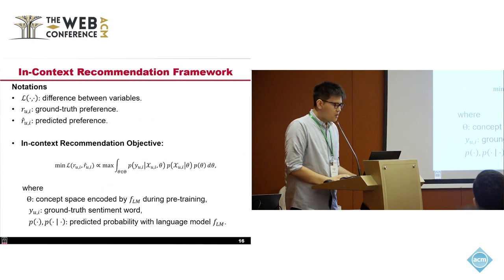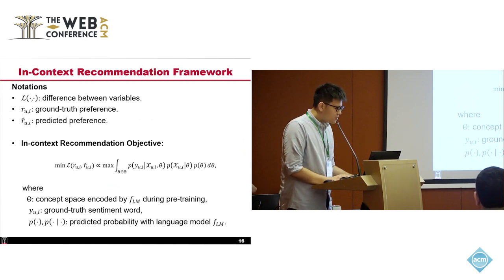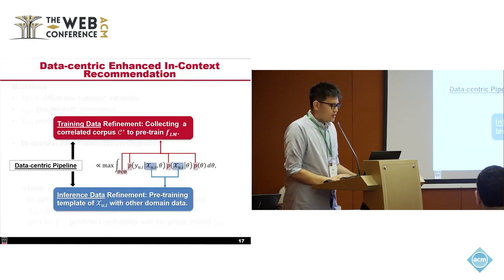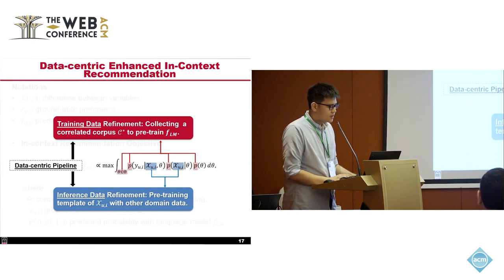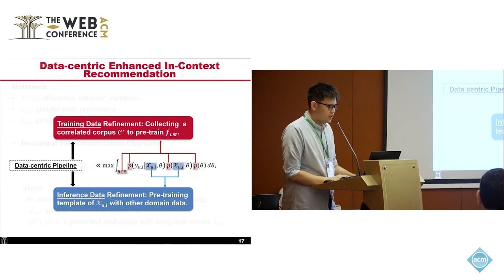Before introducing the proposed method, we first formalize the in-context recommendation problem. Under the prompt setting and the Hidden Markov Model assumption, the original objective of the recommendation task can be transformed to a new form shown on the right-hand side. This new equation shows that a good in-context recommender needs to encourage the pre-trained language model to maximize each probability defined here. This analysis motivated us to propose two strategies to maximize this equation: first, pre-training the language model on a corpus correlated to our target cold-start domain; second, pre-training prompting templates from other recommendation datasets. The correlated corpus refers to training data which can modify model parameters, while the prompting template is inference data that reshapes model outputs without changing model parameters.